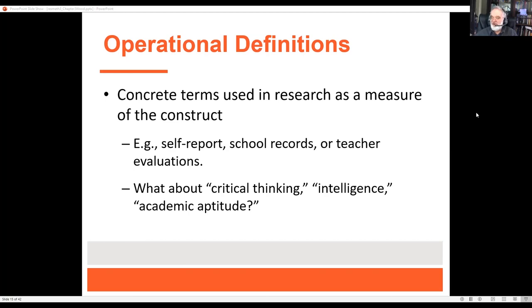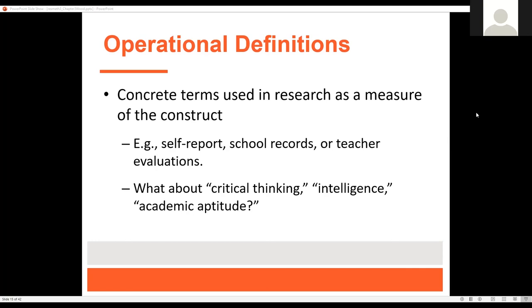There's also something called the Trails Test — Trails A and B — where they show you a piece of paper with letters and numbers and you're supposed to connect the dots in sequence: 1-A, 2-B, 3-C, and so forth. What do you think of all those things as measures of intelligence? Well, they're easy to measure and easy to score. And there are other kinds of intelligence out there — like being able to read someone.